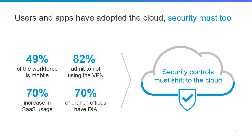As you can see from the slide deck, 49-50% of the workforce is now mobile, and out of that number, 82% admit to not using VPN to connect securely back to HQ or corporate resources. That leaves a large number of potential users or devices that can be compromised by anything from a phishing campaign to malware or ransomware.